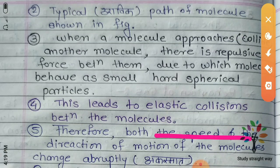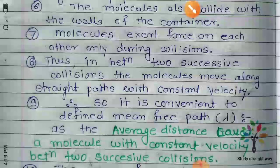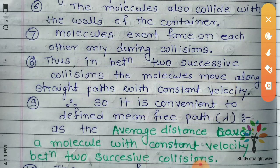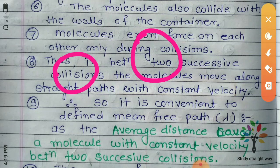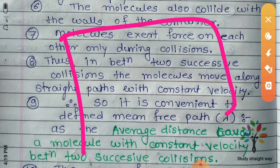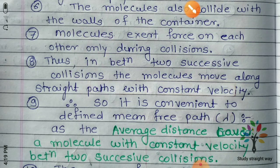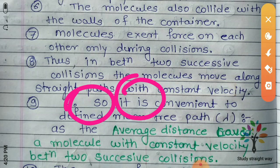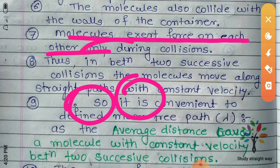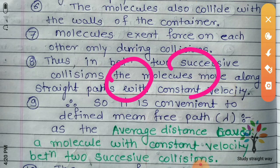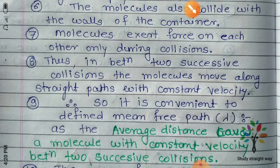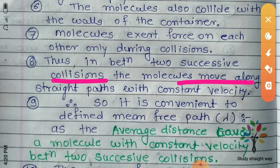That means the motion will change because of the sphere. The direction of motion of molecules that collide with the wall of the container will change. If one of the molecules collides with the wall of the container, molecules exert force on each other only during the collision. Then the force is applied, and in between the two successive collisions, the molecules move along a straight line.